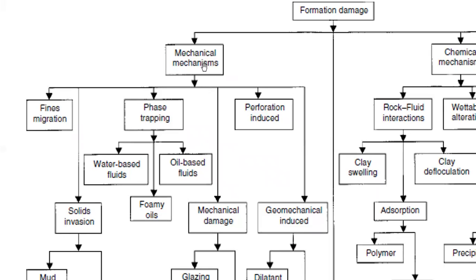Let's start from mechanical mechanisms. We can have fines migration — the fines migrate from the reservoir and plug the well, accumulating around the wellbore, causing formation damage. We also have phase trapping, for example gas trapping or water trapping, which blocks the pores and blocks the flow. Under phase trapping we have water-based fluids, oil-based fluids, and foamy oils.